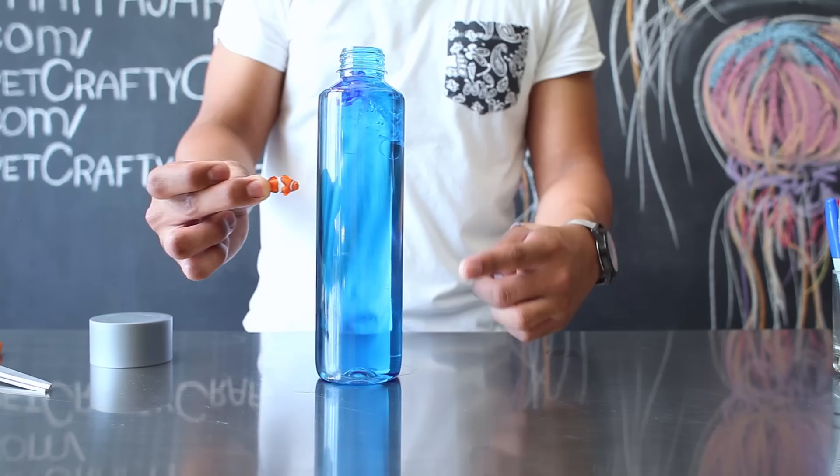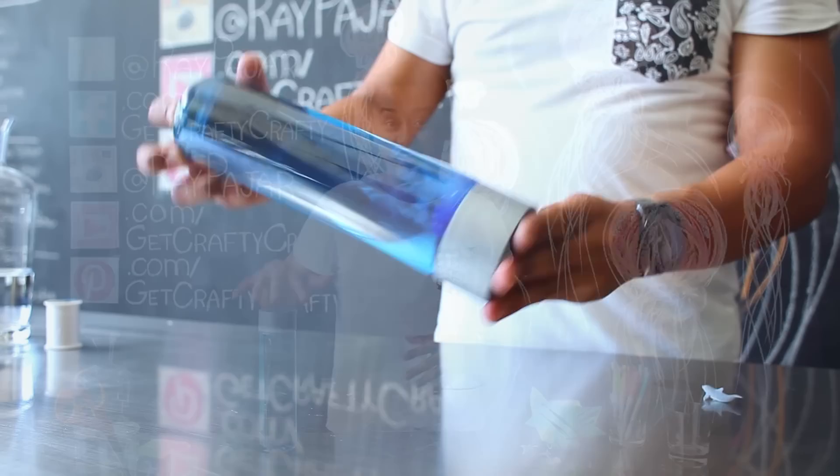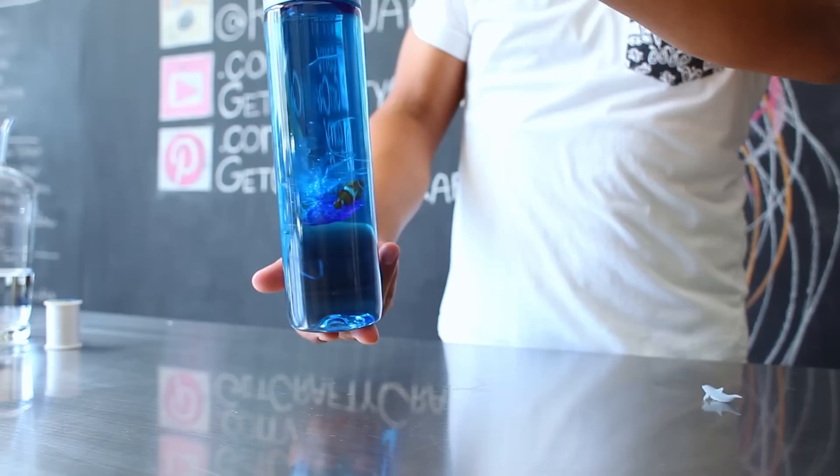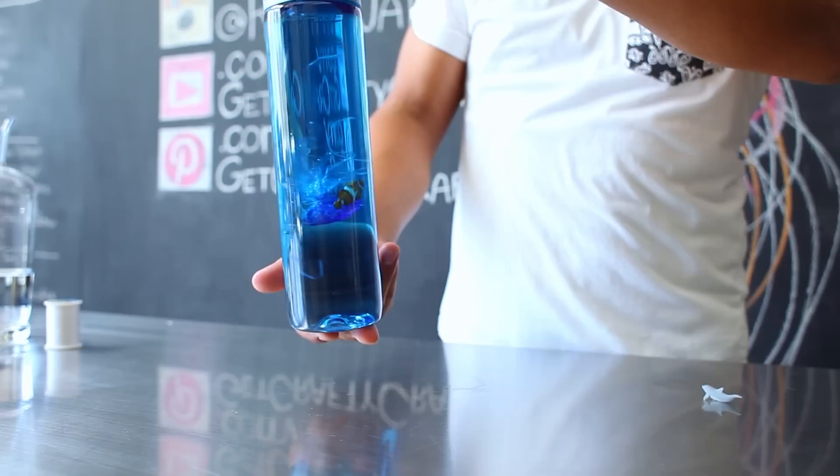As an optional step you can add some small plastic sea creatures to swim with your jellyfish. I'm going to add this little clownfish so that this could look like the scene from Finding Nemo. After you've filled up your water bottle with as much water as you can go ahead and cap it off.